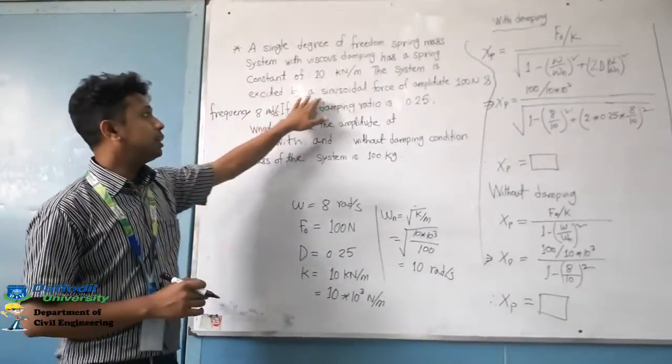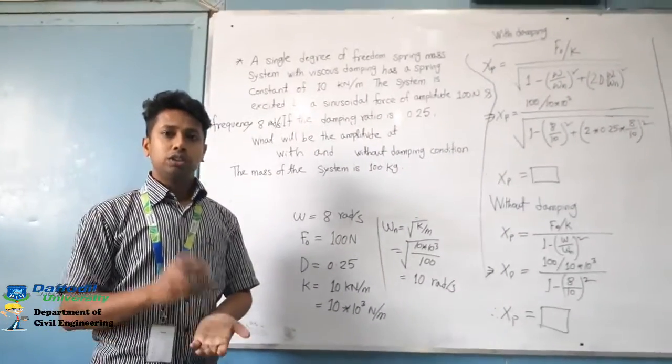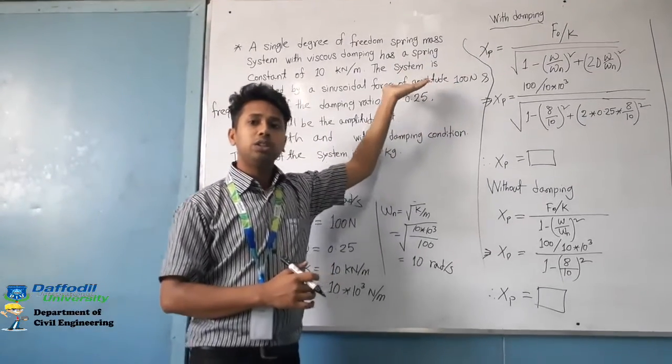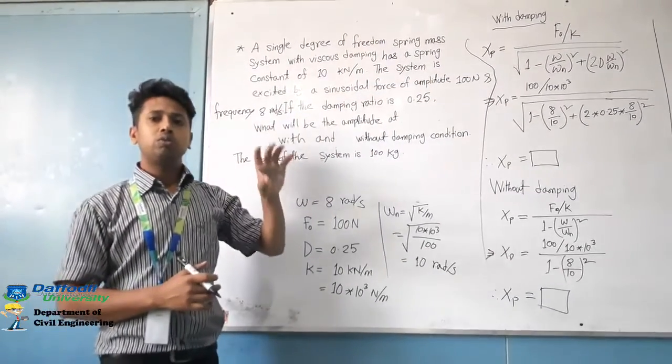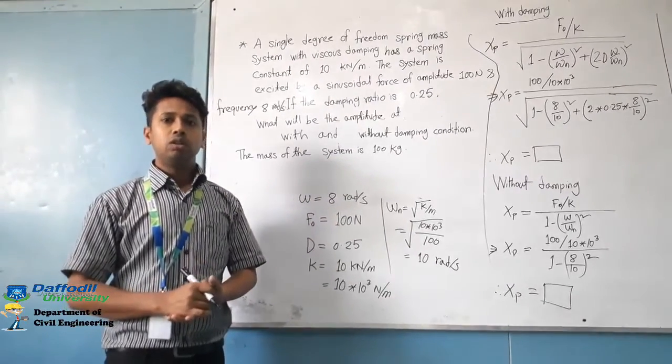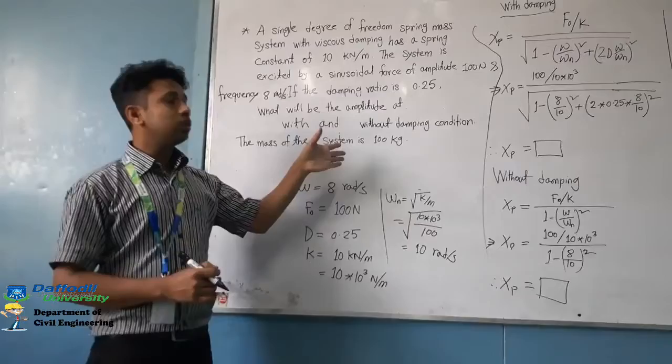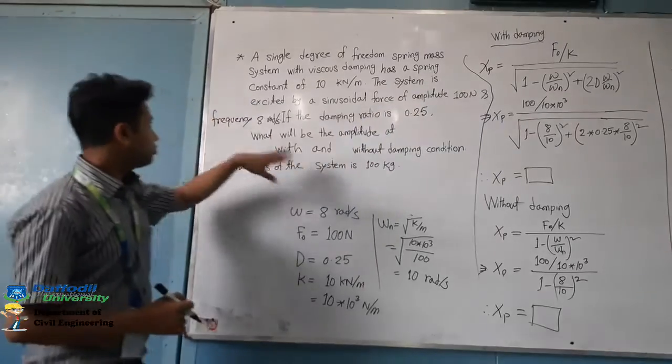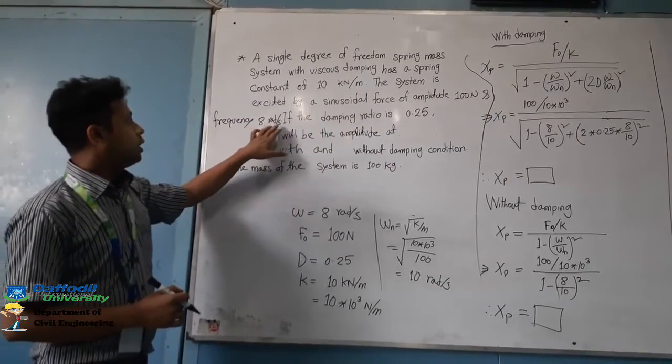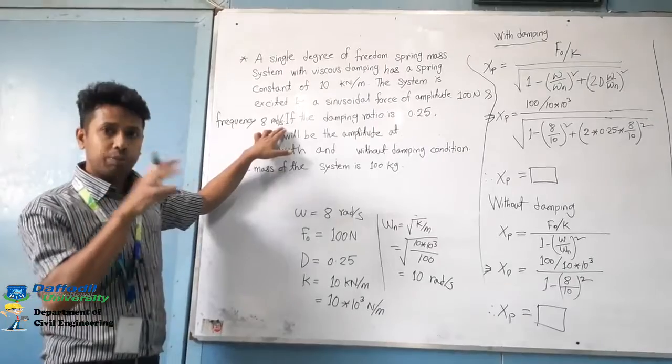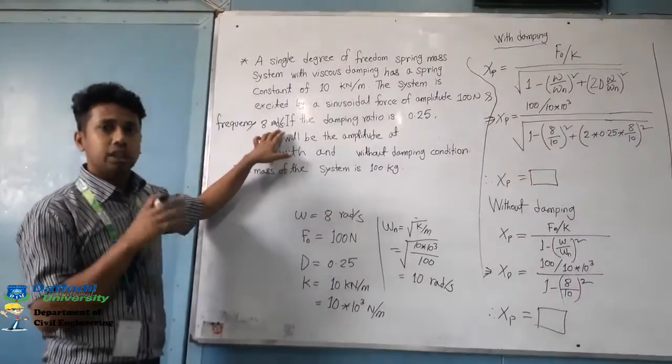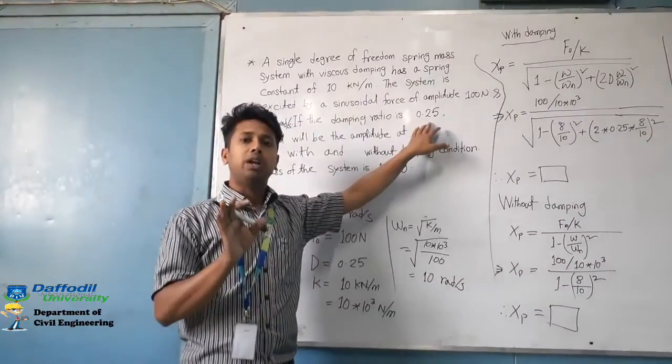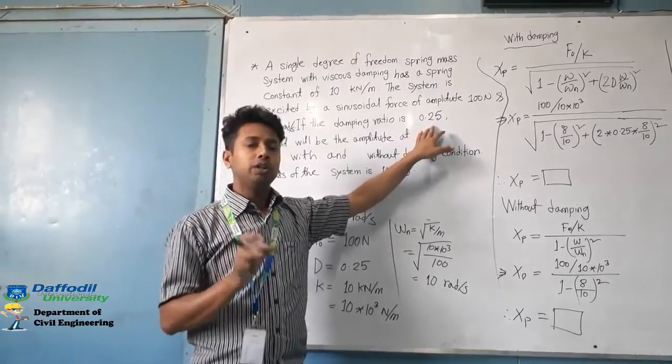The system is excited by a sinusoidal force of amplitude 100 N. The force applied is 100 N. The frequency is 8 radians per second, and the damping ratio is 0.25. The damping factor is 0.25.